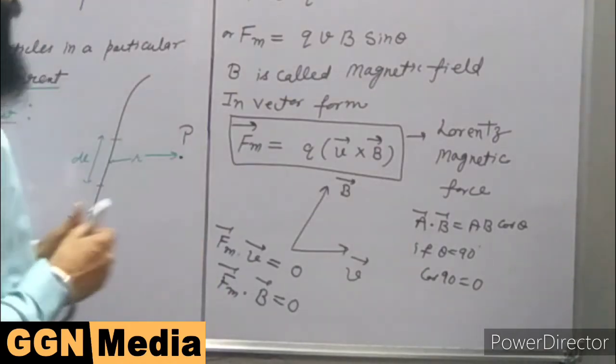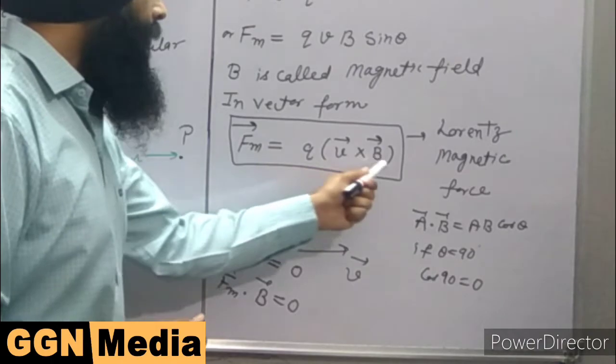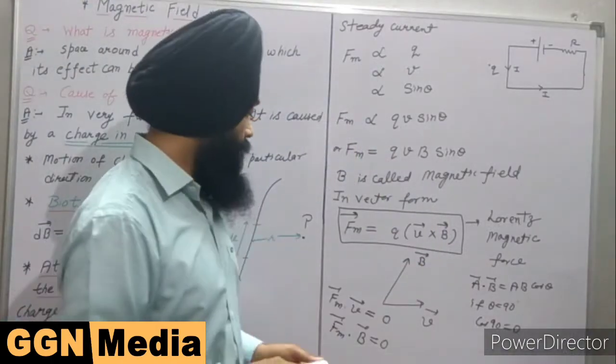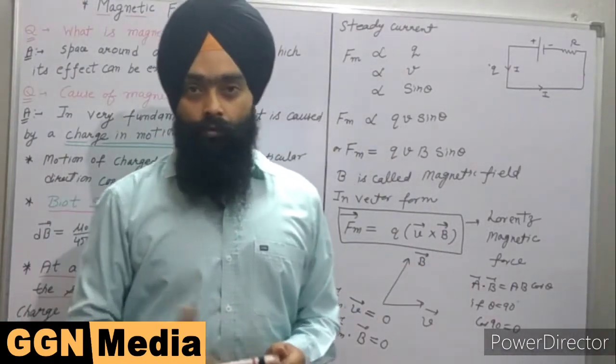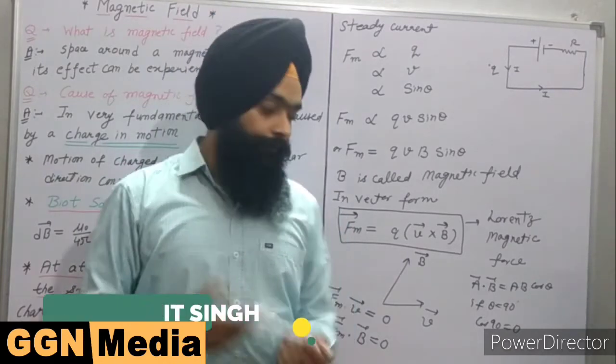This means the force Fm is perpendicular to both v and B. So this is all about the direction of force. Now we can find out the SI units of the magnetic field.